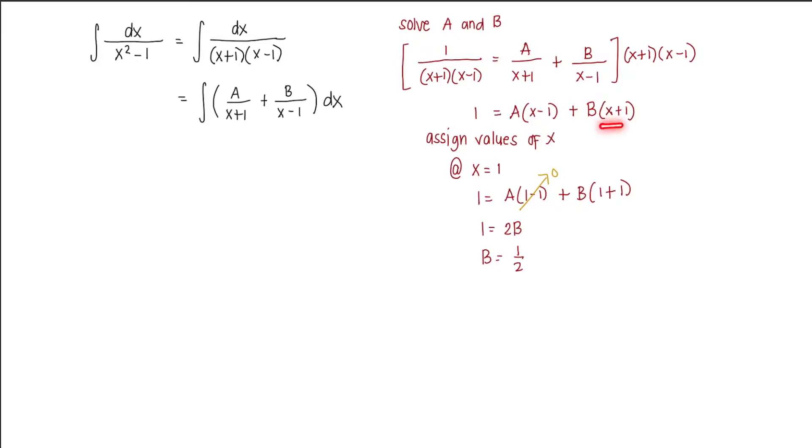Now for the other one, we're going to make this equal to 0. So what value of x would make this expression 0 here? That would be negative 1. So at x equals negative 1, we substitute again: 1 equals a times negative 1 minus 1 plus b times negative 1 plus 1. So this is 0 here. And what's left is negative 2a equals 1. Therefore, a is equal to negative 1 half. So we already have the two values, the values of the two constants, a and b.